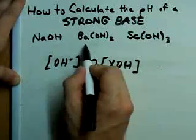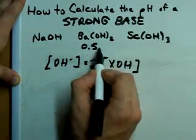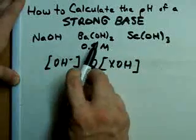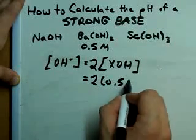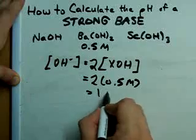Or, for example, if it turned out that we had 0.5 moles per liter of this barium hydroxide, our concentration here would be two times that, or one mole per liter.